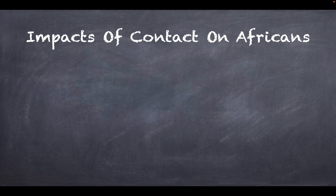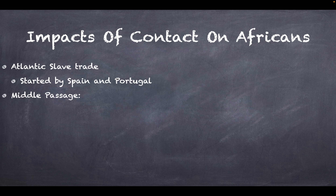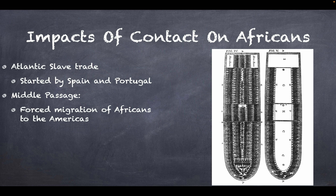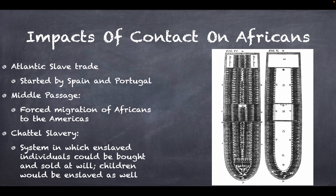The impact of contact on Africans included the development of the Atlantic slave trade, started by Spain and Portugal. The Middle Passage was the forced migration of Africans to the Americas, during which about 20 percent of enslaved Africans died. Chattel slavery developed in the Americas — a system in which enslaved individuals could be bought and sold at will, and children would be enslaved as well, making it perpetual slavery.